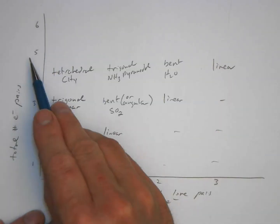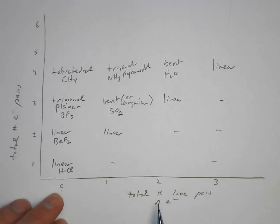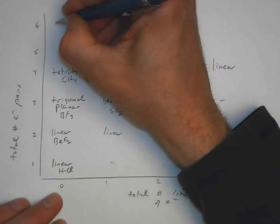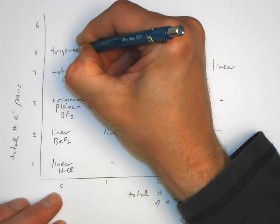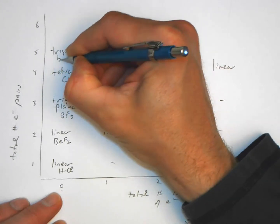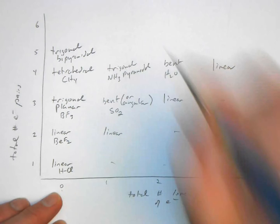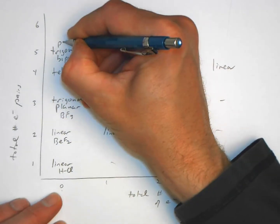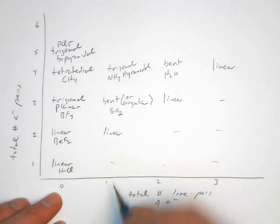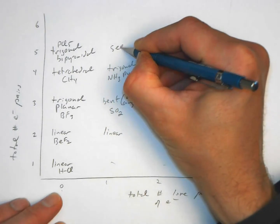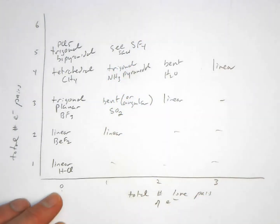Five pairs of electrons around the central atom with all of them as bonding pairs would be trigonal bipyramidal, as in PCl5. If one of those is a lone pair, this gives a seesaw structure, as seen with SF4.